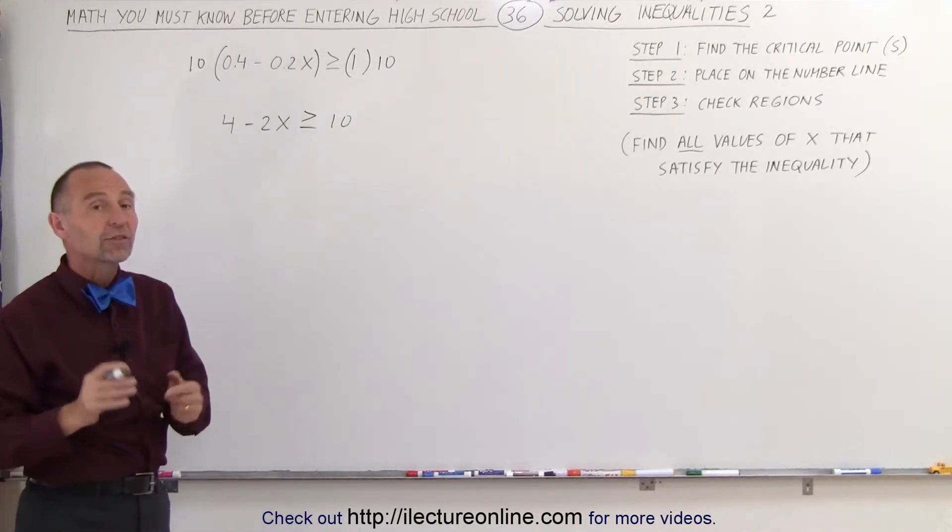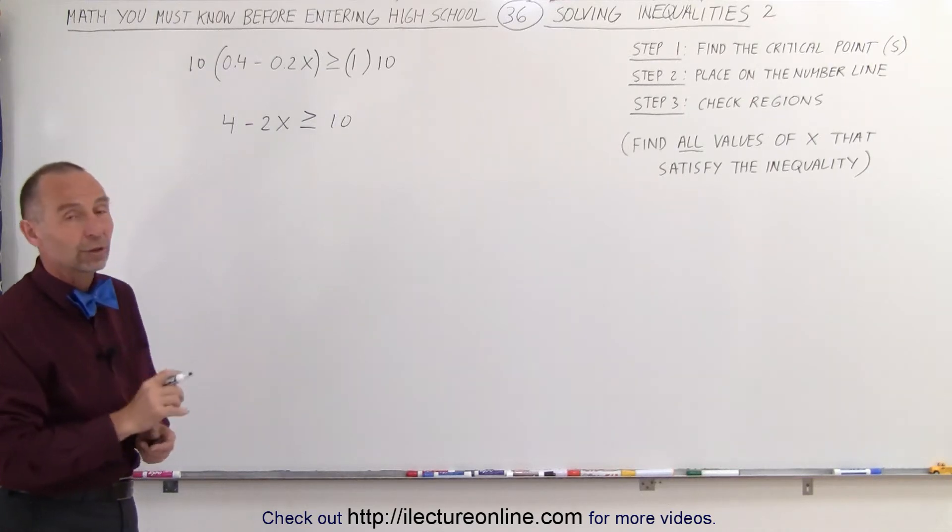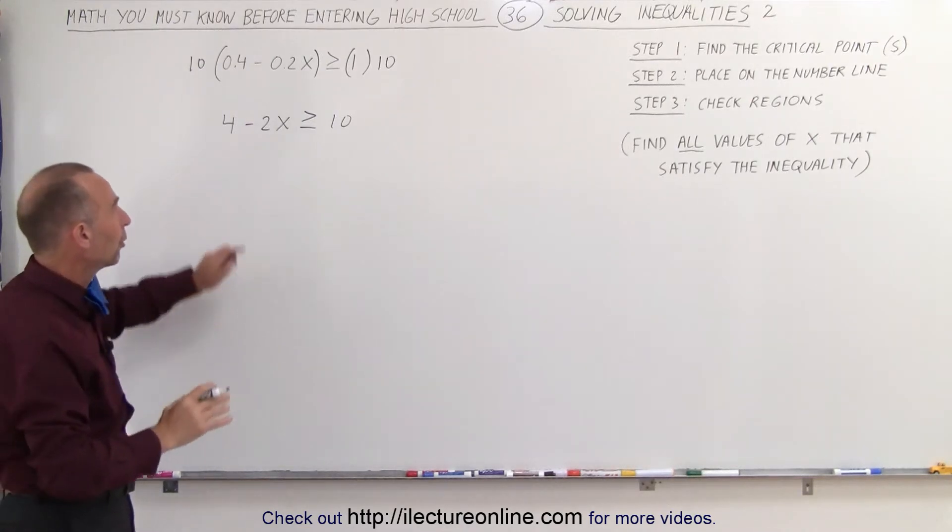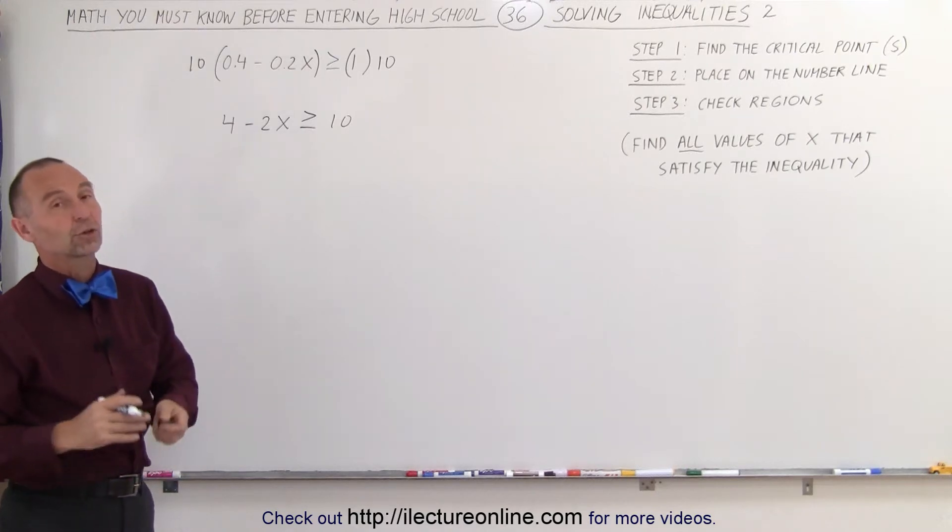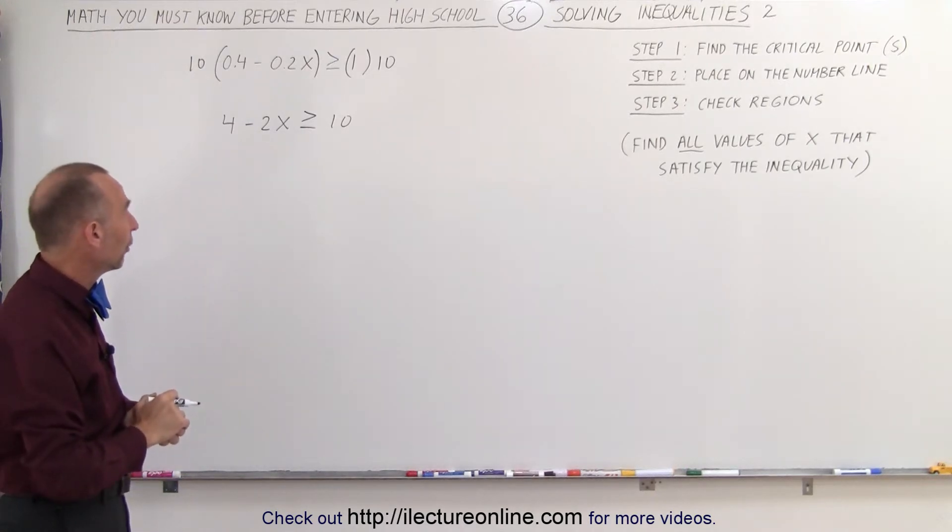We're still going to follow the same step as before. First, we're going to find the critical point. In this case, there's only one point because it's a linear equation. If it's a quadratic equation, we can find possibly more points.